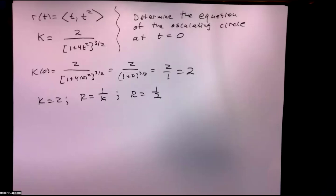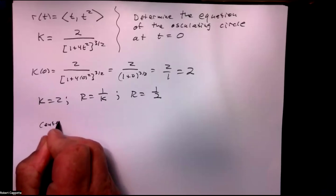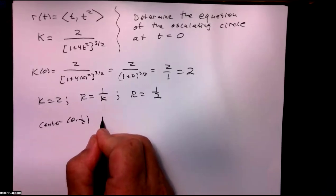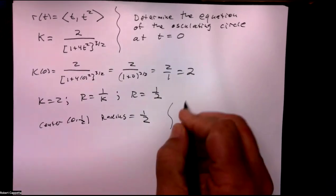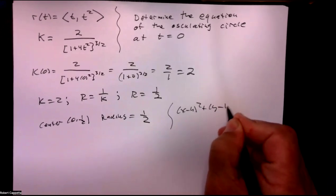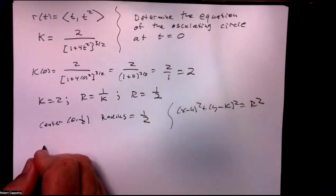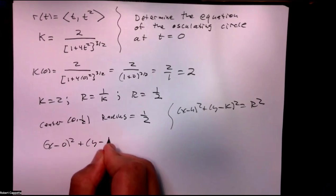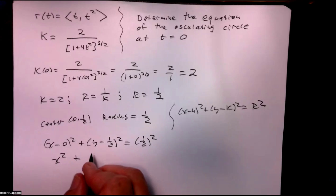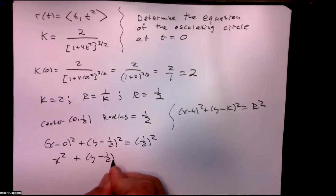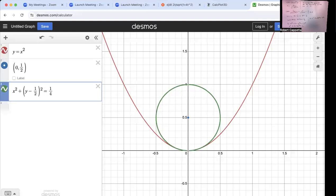Using the standard circle equation (x−h)² + (y−k)² = r², with center (0, 1/2) and radius 1/2, we get x² + (y − 1/2)² = 1/4. Looking at the picture — the curve is y = x², the center is at (0, 1/2) — you can see the osculating circle is in the same plane, kissing the graph at exactly one point, and bending at the same speed that the graph is bending.